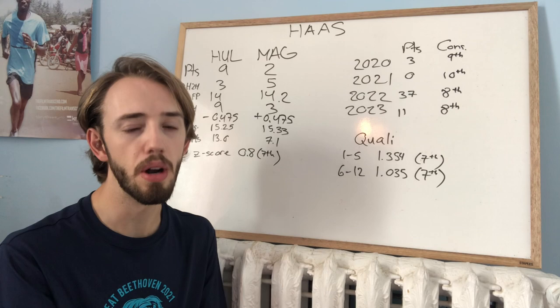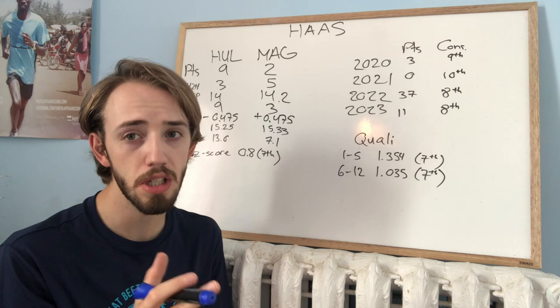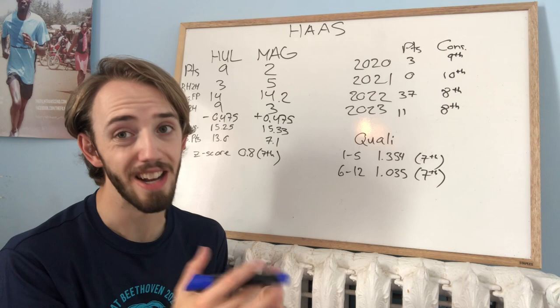They were effectively using a 2020 car that was modified to suit the 2021 regulations. 2022, new regulations, 37 points, 8th in the Constructors, a solid rebound. But still, really similar to Alfa Romeo. Started the season very strongly, basically middle of the midfield. But then as the year went on, they really tailed off. And they ended up finishing 8th in the Constructors.